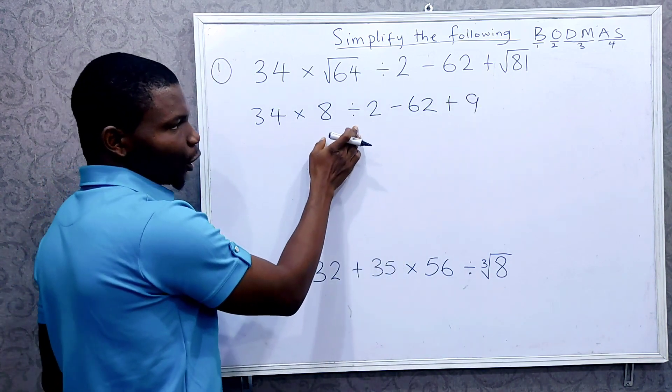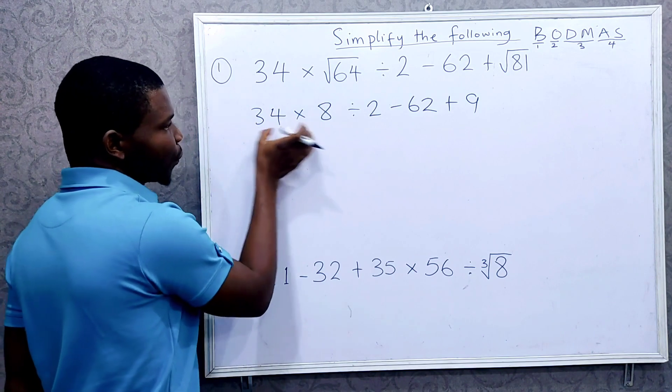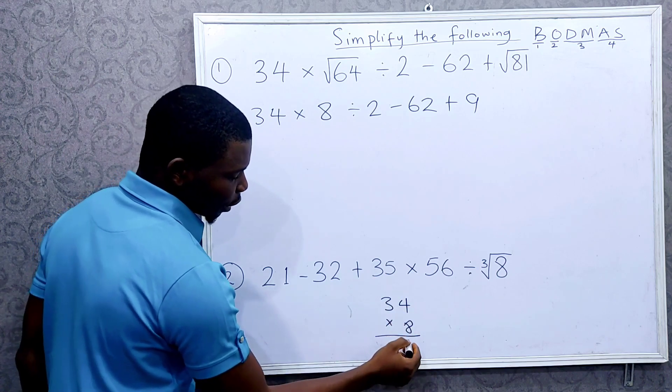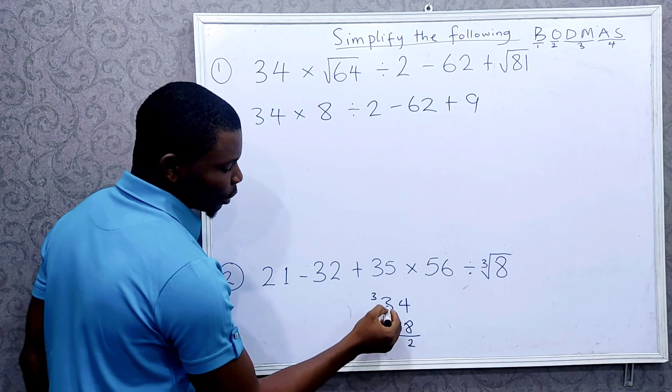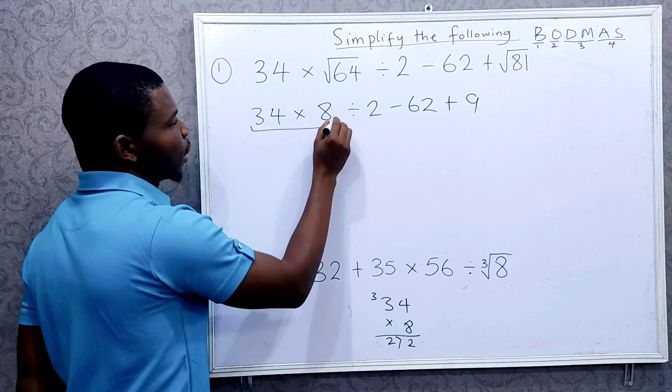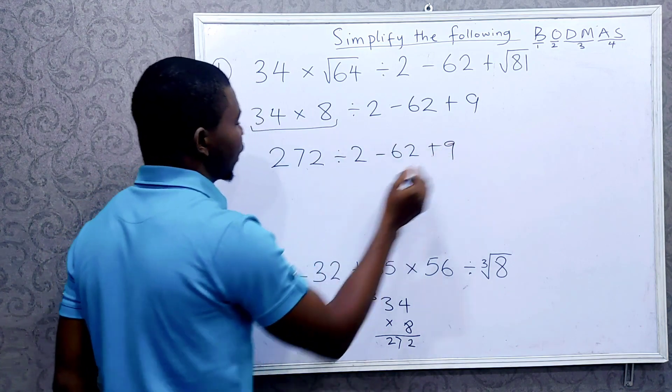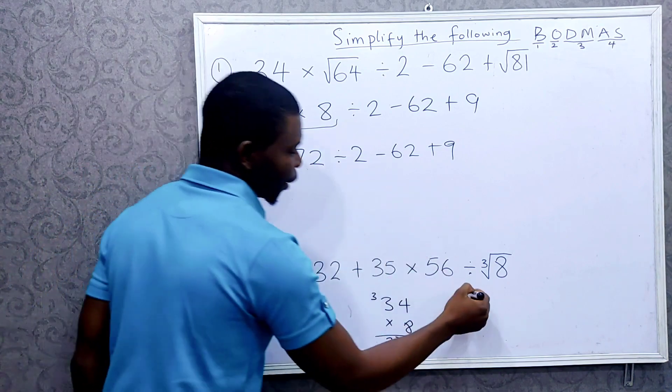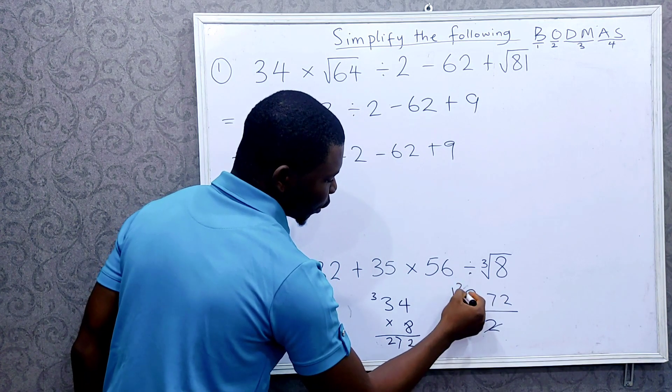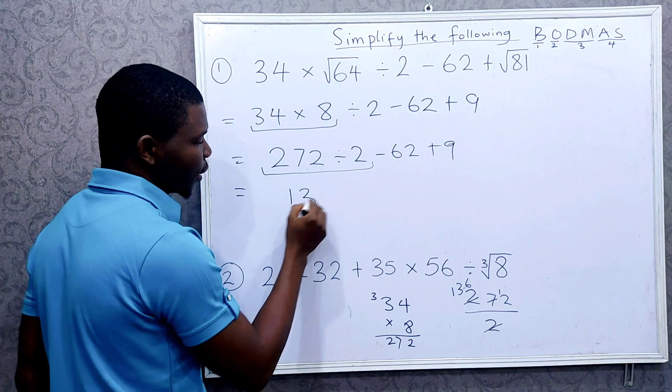Now we have multiplication and division, and that is the third level. We go from left to right, so we say 34 times 8. What is 34 times 8? 8 times 4 is 32, carry 3. 8 times 3 is 24 plus 3, so we have 27. So we have 272. Then divide by 2 minus 62 plus 9. What is 272 divided by 2? 2 into 7 is 3, remainder 1. 2 into 12 is 6. So we have this as 136, then minus 62 plus 9.